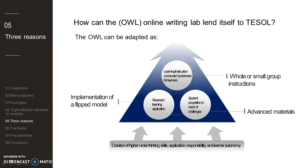Teachers need to consider how learning online can be adapted both in and outside of their traditional classroom setting. For example, considering whole or small group instructions, the teacher may adapt materials developed by OWL to help. Vidcasts can be shown on an interactive whiteboard, or teachers can have students watch them on their own screens and then have groups present what they have learned to the rest of the classroom.